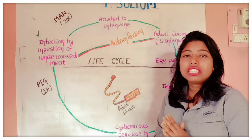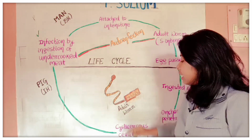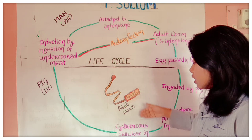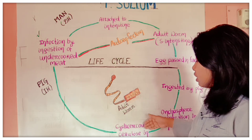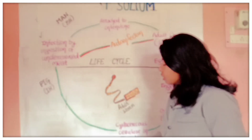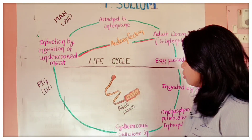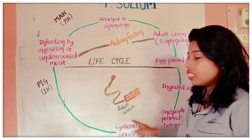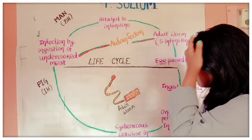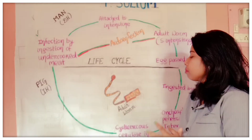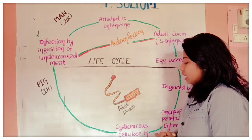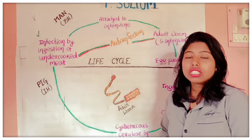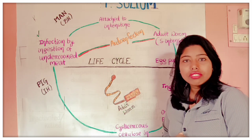In the striated muscles, it hatches out to form the cysticercus larva — this is the most important larval stage of Taenia solium. This larval stage, called cysticercus cellulosae, is found in the muscles. So in the pig muscle, there are cysticercus larvae.